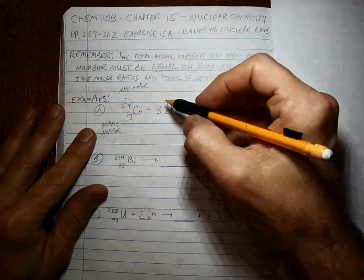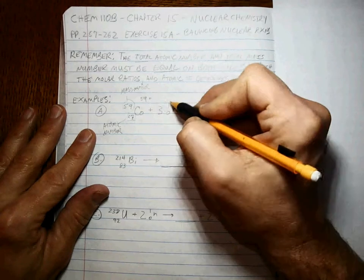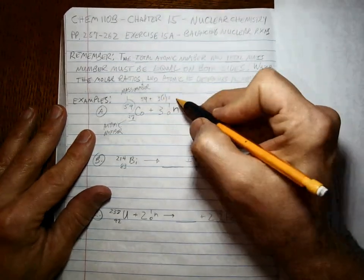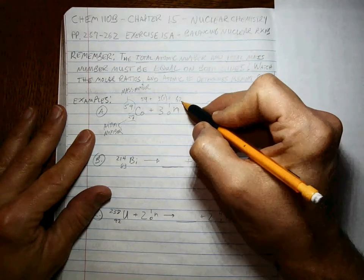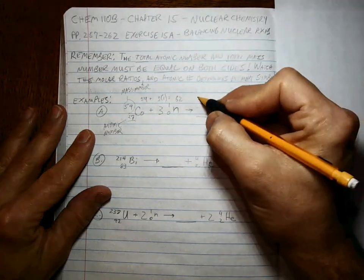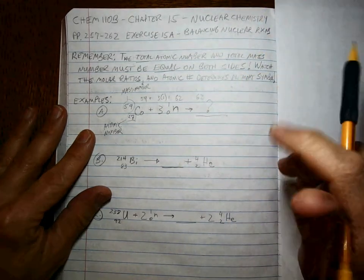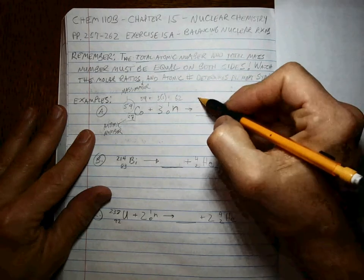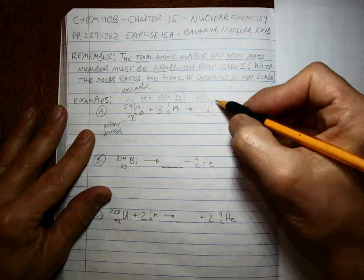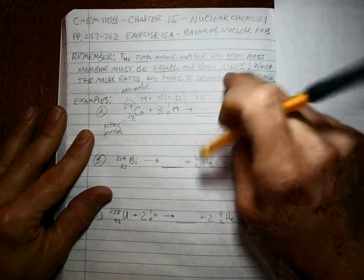So what I like to do is I like to say 59 plus 3 times 1, for 59, 60, 61, 62 on this side for the mass number. The mass number has to equal 62 on this side. So that's already it, 62 is the mass number.